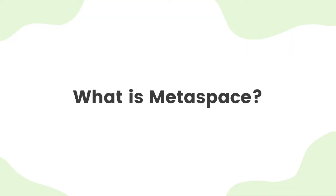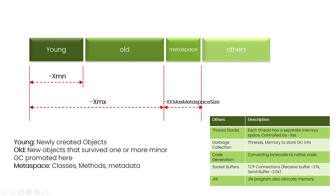Let me give you a very quick overview of what metaspace is. The metaspace is one of the regions in the JVM memory where the metadata information required to execute your application is stored — like the class definitions and the method definitions. Those are stored in this metaspace region.